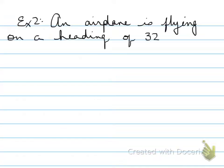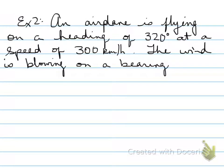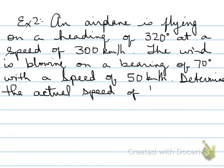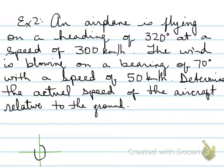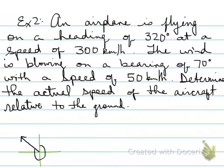Example two: An airplane is flying on a heading of 320 degrees at 300 kilometers per hour. The wind is blowing on a bearing of 70 degrees at 50 kilometers per hour. We need to determine the actual speed of the aircraft relative to the ground. A bearing of 320 degrees lands in the second quadrant. We draw the vectors tip to tail, placing the 70-degree wind vector at the end of the plane's vector.